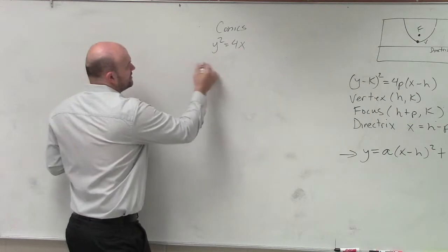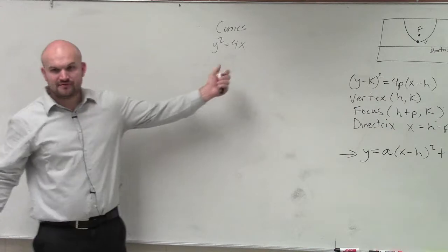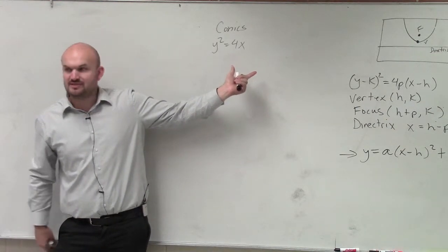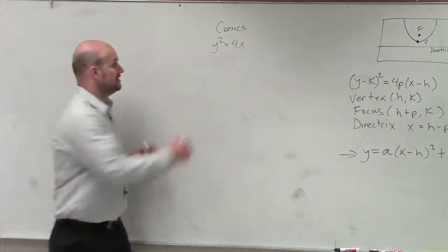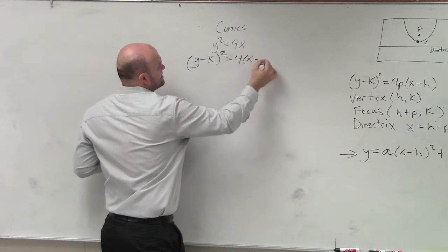Now, the next thing is, let's put this in that format. Do you notice how there's no values for h and k? So if there's no values for h and k, that means those values must be 0. So we could write this as y minus k squared equals 4 times x minus 0.